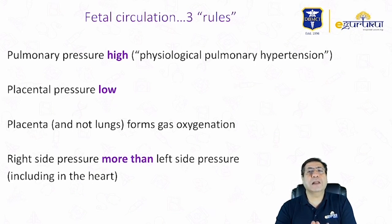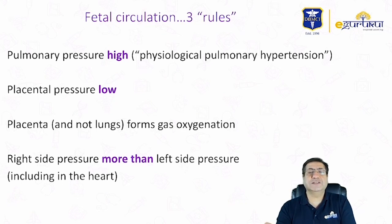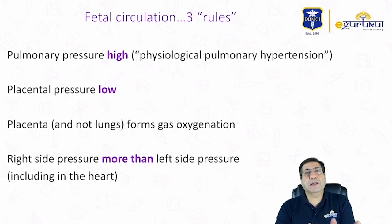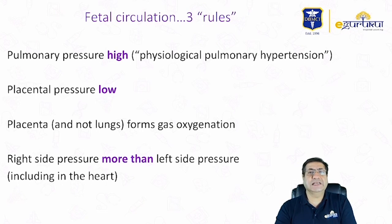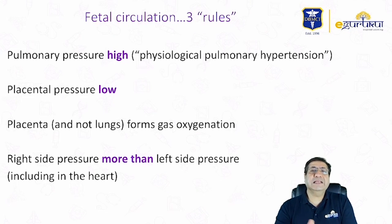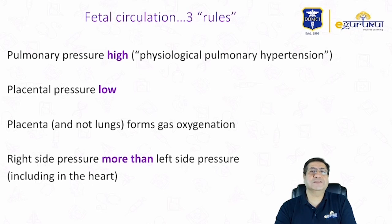Because the pulmonary pressures are very high in the fetal circulation, the right-sided pressures in the heart are more than the left-sided pressures. After the child is born, it is the left-sided pressure which becomes greater. The pulmonary pressures fall, the placenta is removed, and the lungs take over gas exchange. These are the important differences between fetal and neonatal circulations.